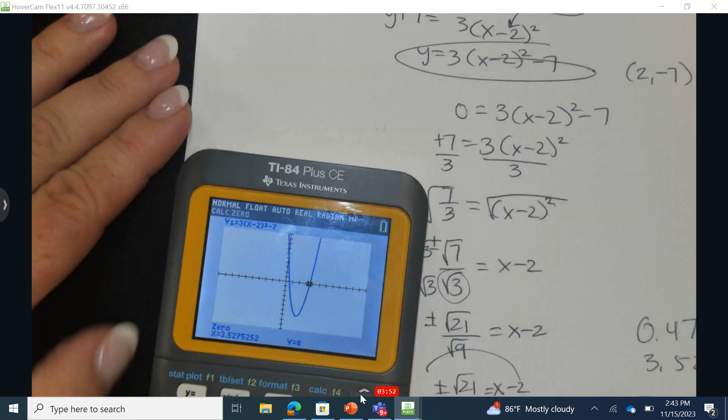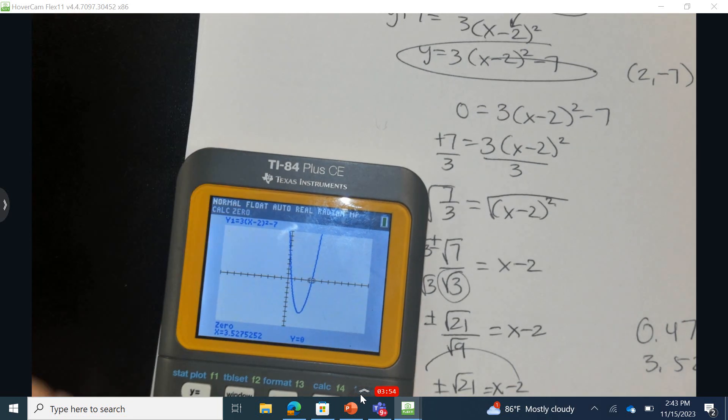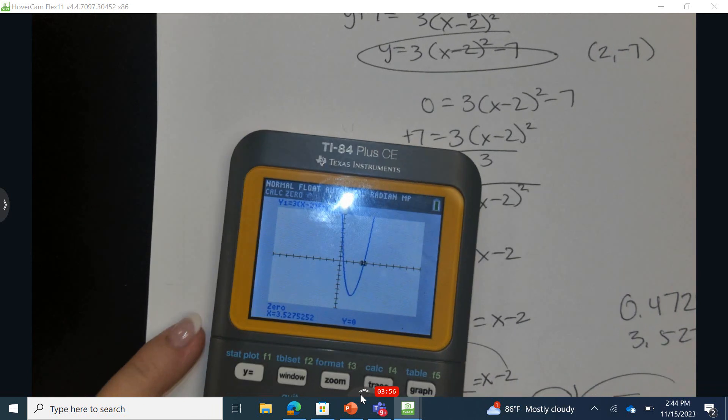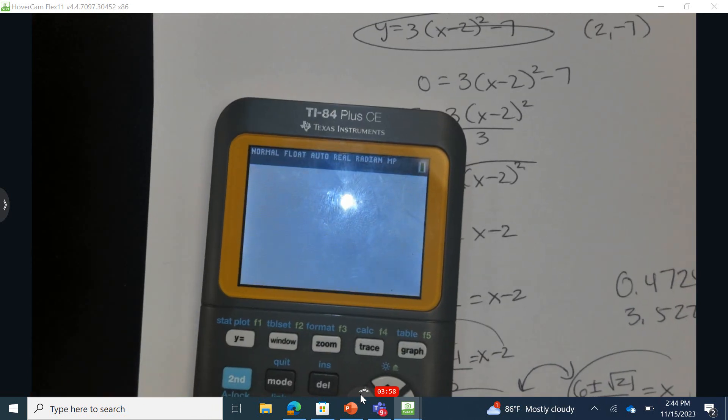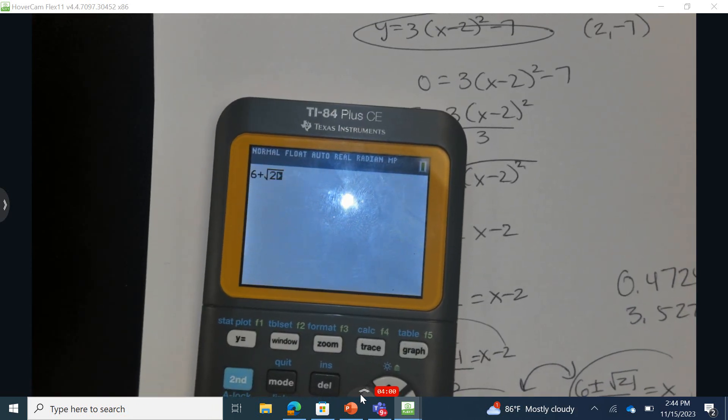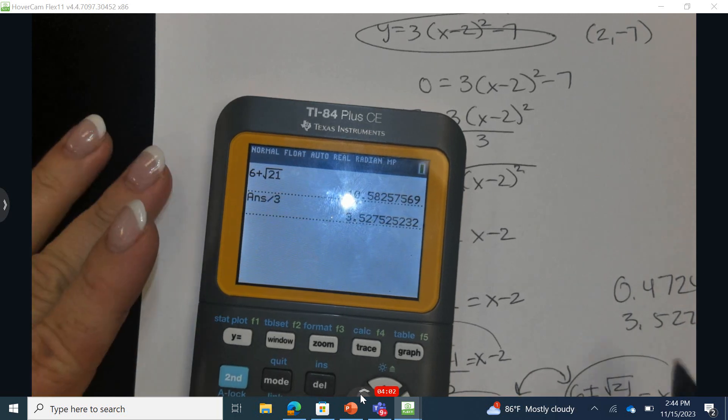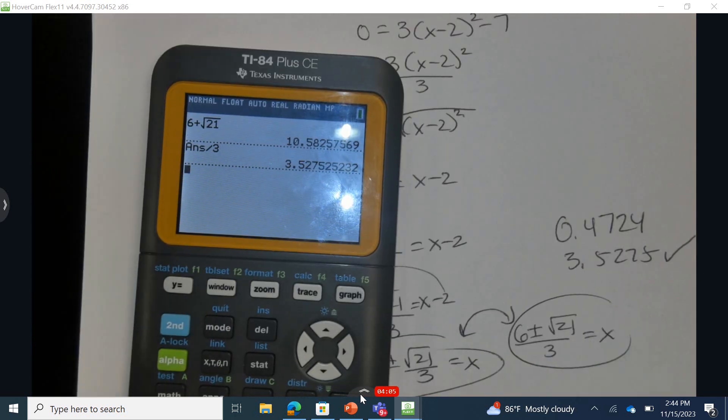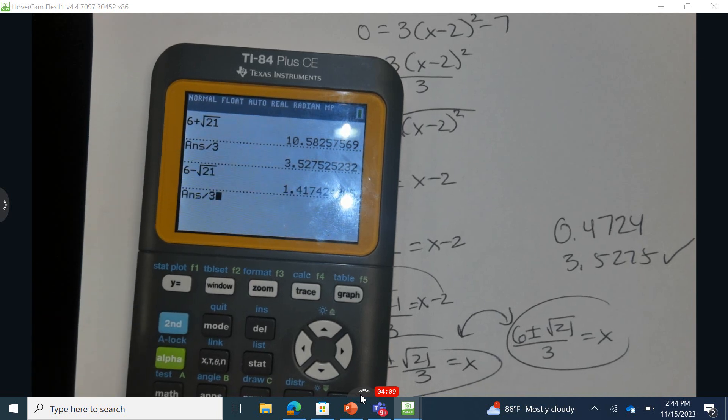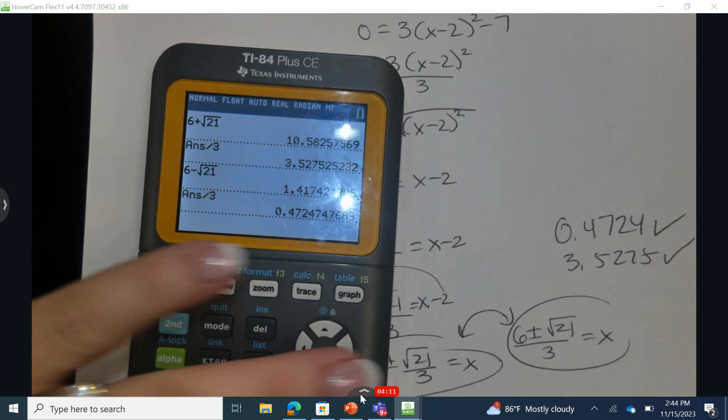So if I come back with these answers, let's do this real quick. If I come back and check this, it doesn't matter which one I check. And I do 6 plus the square root of 21. Get an answer and divide by 3. This is correct. And now I'm going to do 6 minus the square root of 21 divided by 3. And this one is also correct.